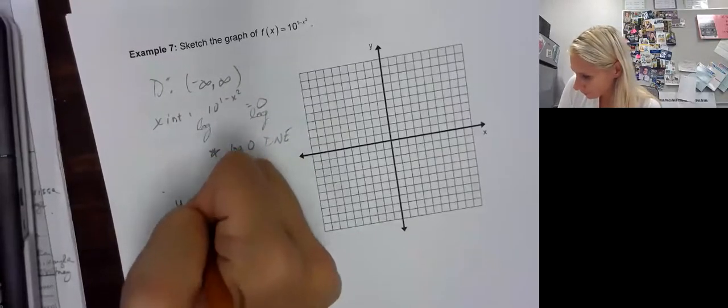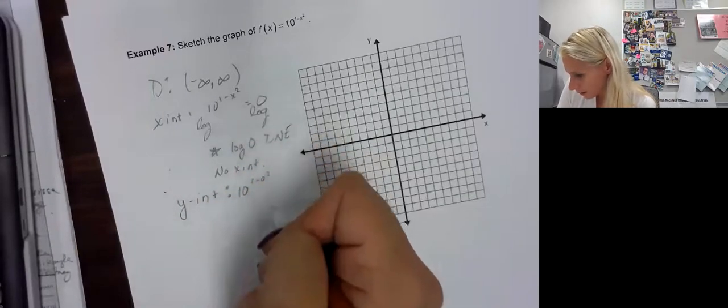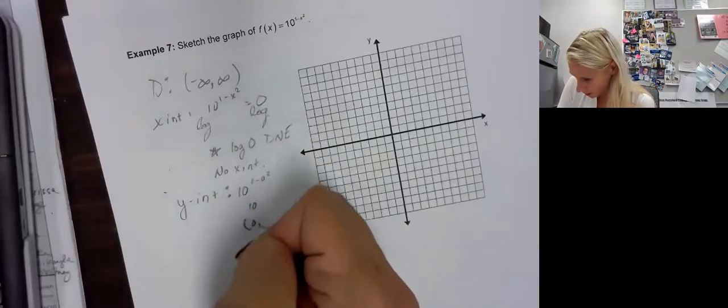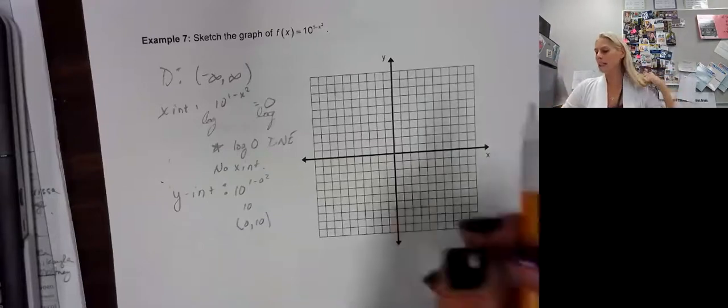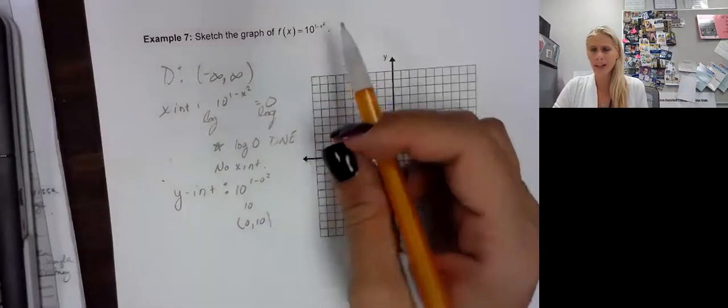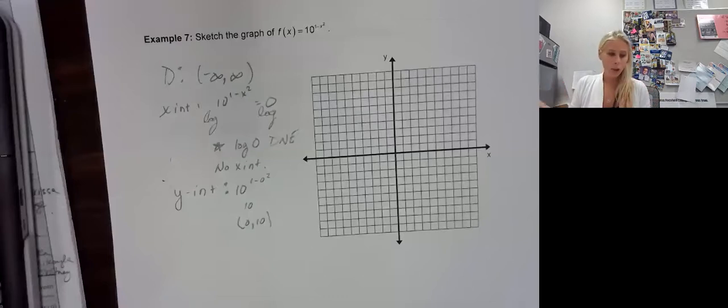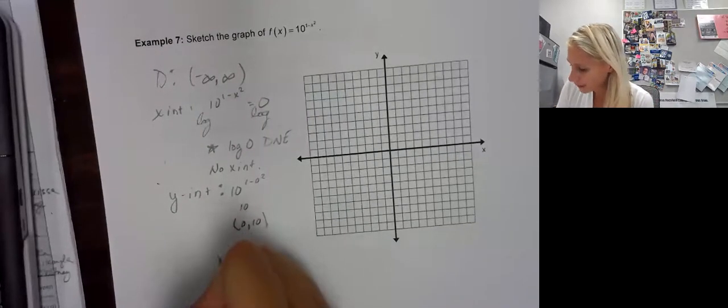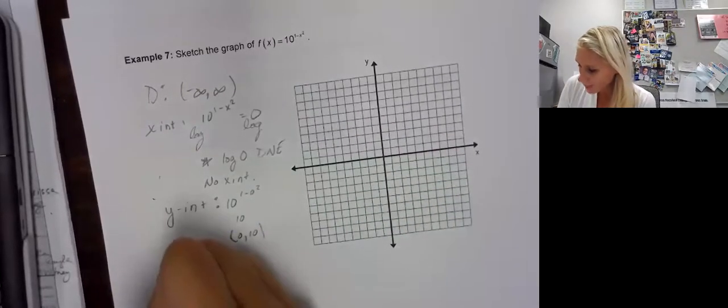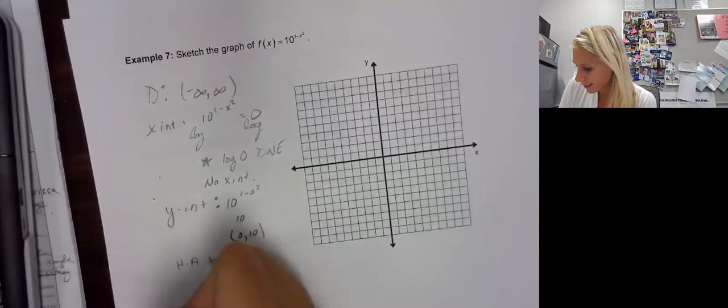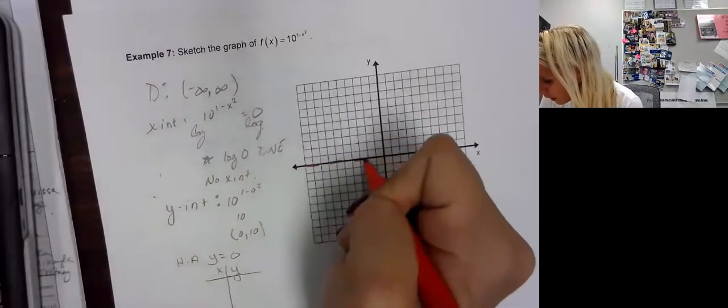Y-intercept. Plug in 0 for x. So 10 to the 1 minus 0 squared, of course, is 10. So 0, 10. Alright. Now, this one's going to be a little awkward, right? Because it's kind of hard to see, especially since we're squaring x right here. We can't really talk about transformations when we have an x squared in the exponent. So the best thing to do now is just to use points. What I also want to tell you is it did not go up or down. So that means the horizontal asymptote is still at y equals 0. So let me at least plug that in.